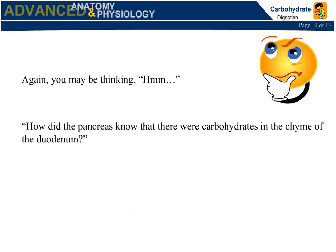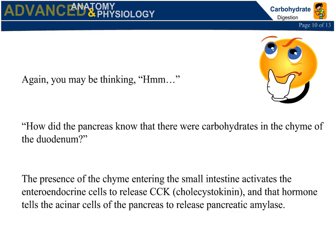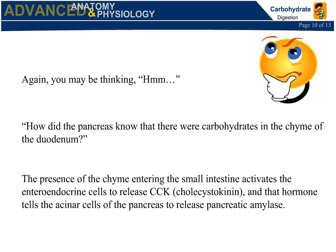How did the pancreas know that there were carbohydrates in the chyme of the duodenum? The presence of chyme entering the small intestine activates the anterior endocrine cells to release CCK — cholecystokinin — and that hormone tells the acinar cells of the pancreas to release pancreatic amylase.